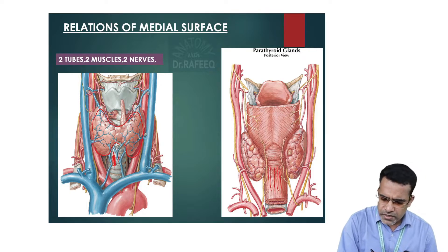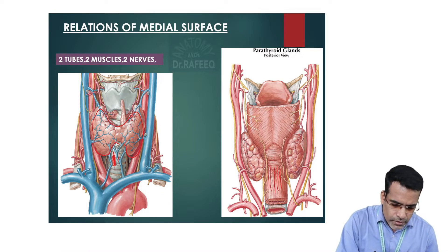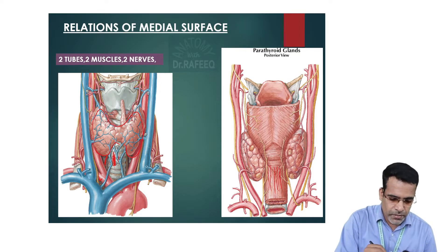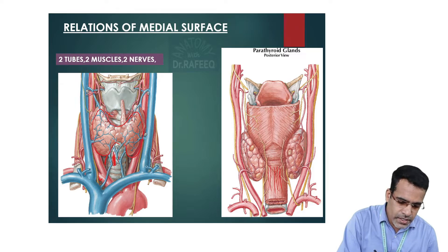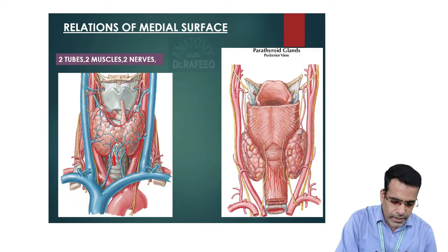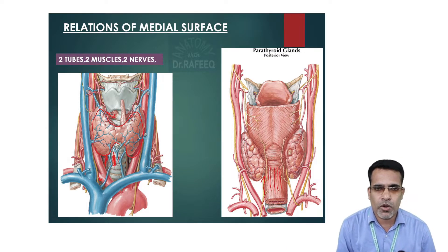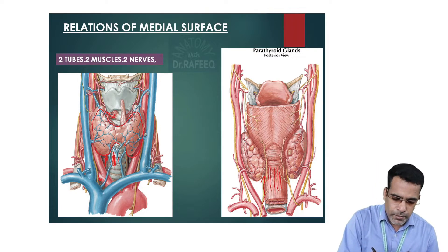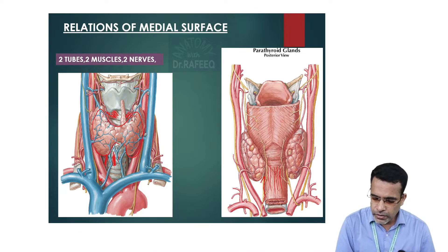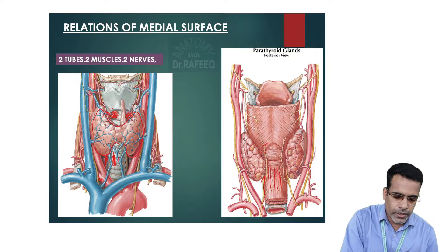The two nerves are the external laryngeal nerve and the recurrent laryngeal nerve. The external laryngeal nerve, a branch from the superior laryngeal nerve in turn from the vagus nerve, supplies the cricothyroid muscle. The recurrent laryngeal nerve runs upward in the groove between the trachea and esophagus. The two muscles are the cricothyroid muscle and the inferior constrictor muscle of the pharynx.